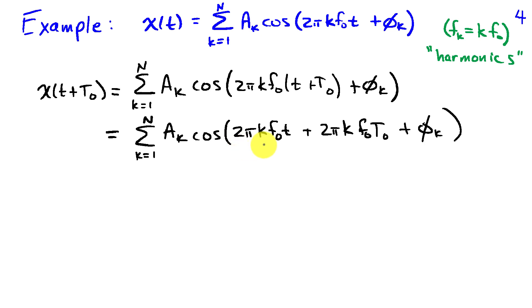So again we'll distribute the 2 pi k f naught over the two terms in the sum inside the parentheses to write this as 2 pi k f naught t plus 2 pi k f naught t naught plus phi k.